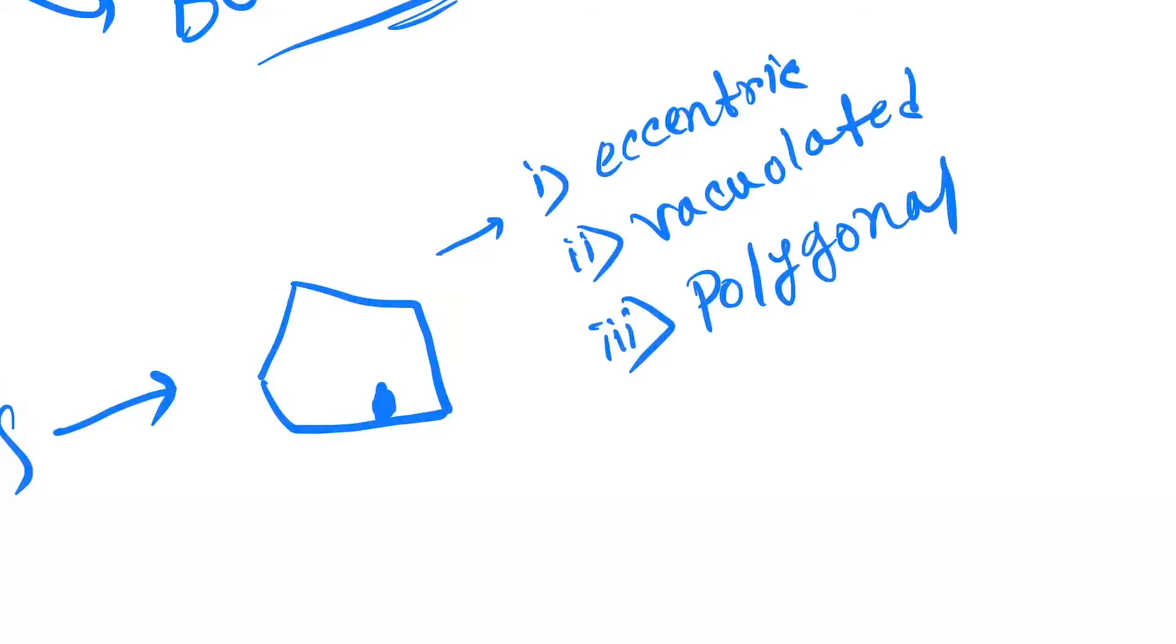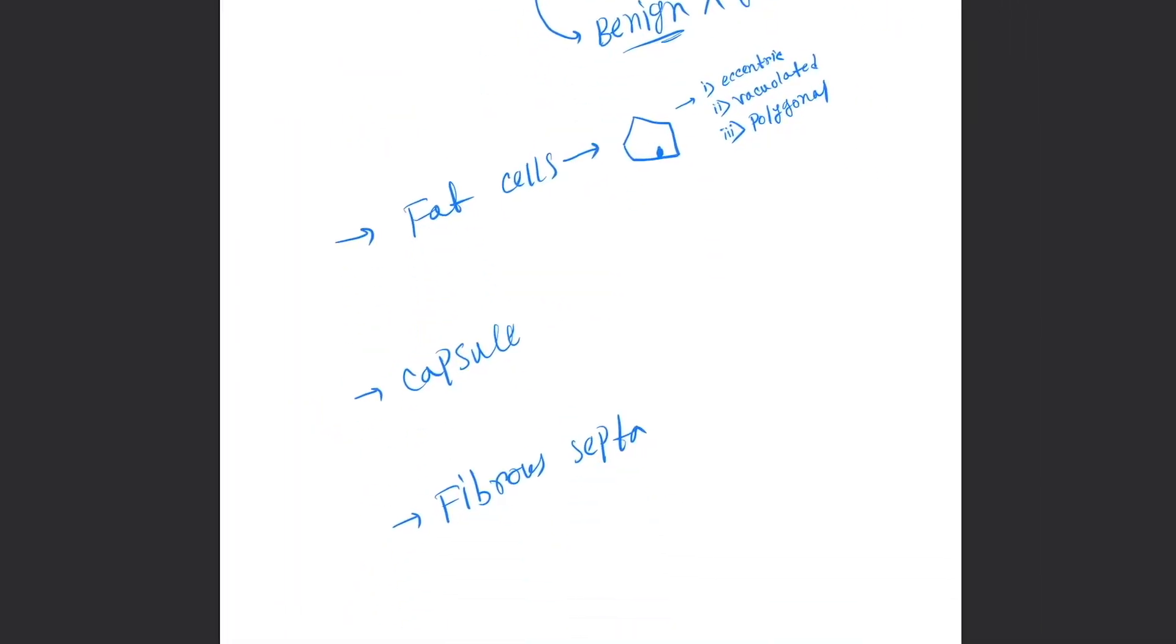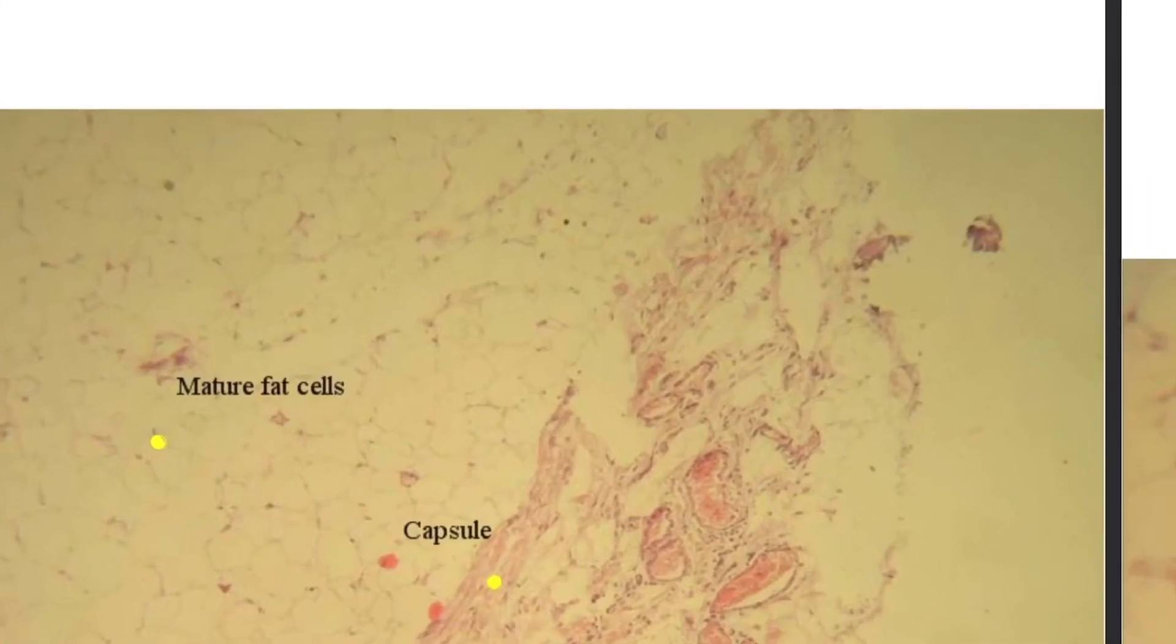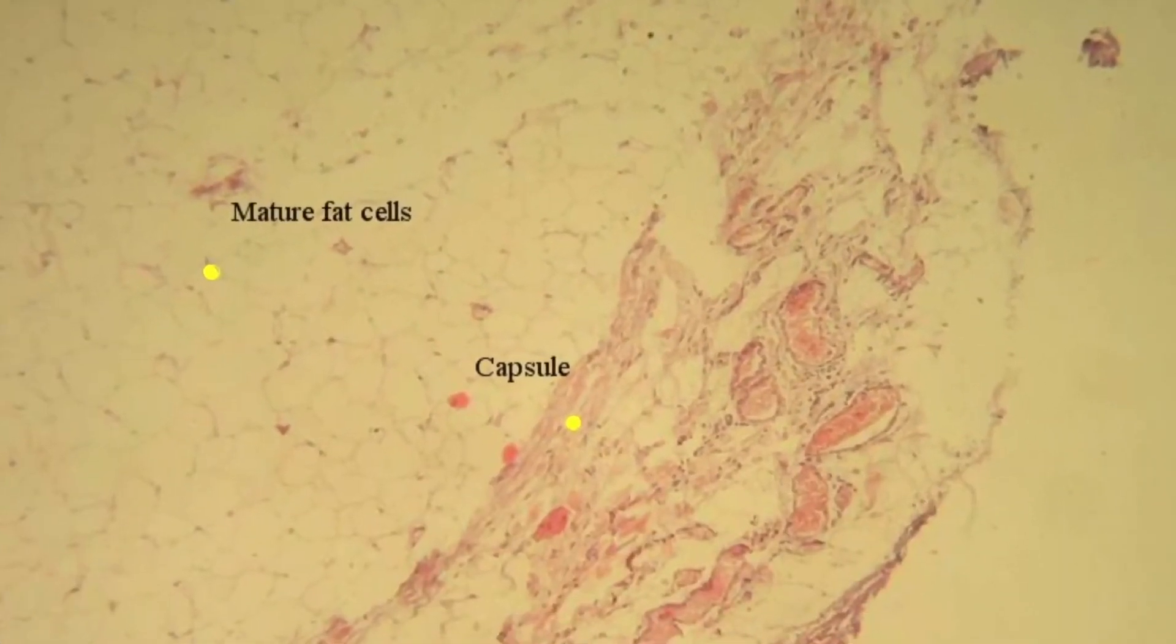Now see the histopathological slide. Here you can see the mature fat cells. These are the fat cells which are polygonal in nature.